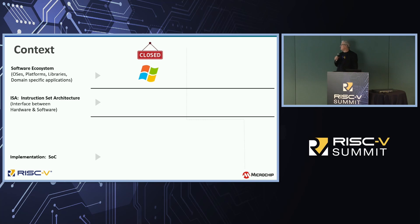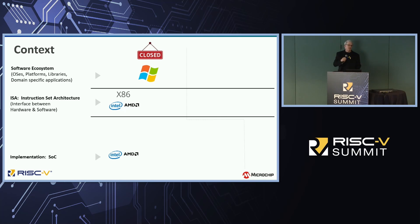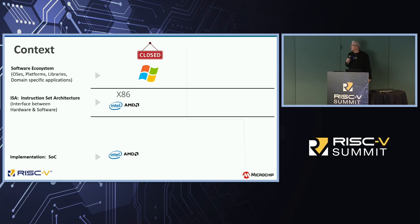We started out in the PC era with one operating system — DOS or Windows — that was closed, a proprietary operating system. There was kind of one instruction set architecture, the x86, and there were only two people who could build x86s: Intel, and they licensed AMD. So you had a proprietary ISA, proprietary software, and these guys also controlled who could make the hardware. For the longest time the whole PC ecosystem was closed. It was an excellent ecosystem — they had complete control and were able to charge a lot of money and build out this ecosystem.